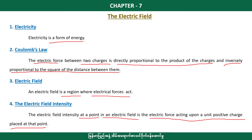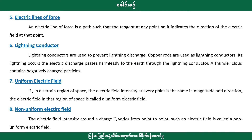The electric line of force: an electric line of force runs along a path. The tangent at any point indicates the direction of the electric field at that point. The tangent at any point on the electric line indicates the direction of the electric field at that point.